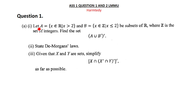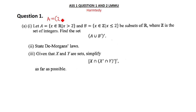The first question says: let A be equal to x being a member of — I can list this set using interval notation. Since x is a member of real numbers and x is greater than two, set A is equal to the interval (2, ∞).